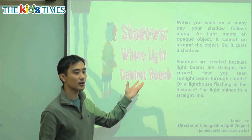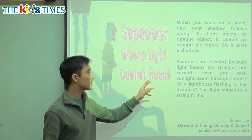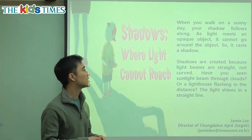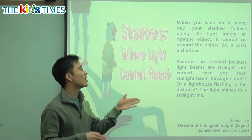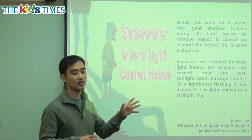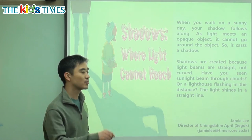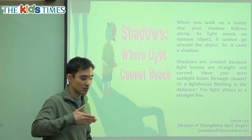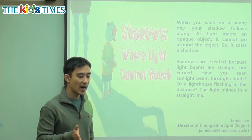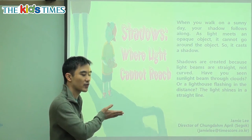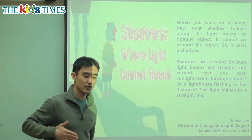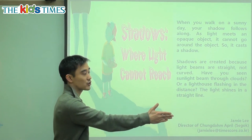Shadows are created because light beams are straight and not curved. It is straight — it doesn't turn. It is not curved like this, right? It does not do that. It is straight — it goes straight.